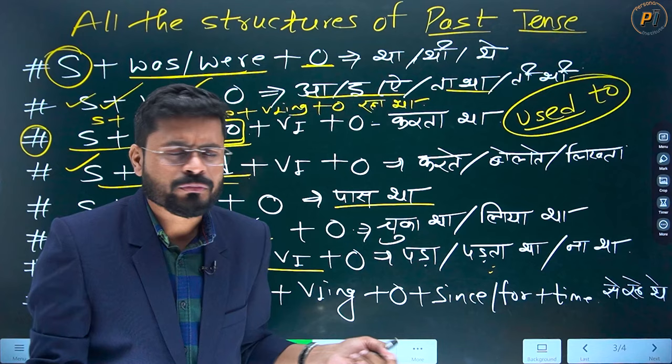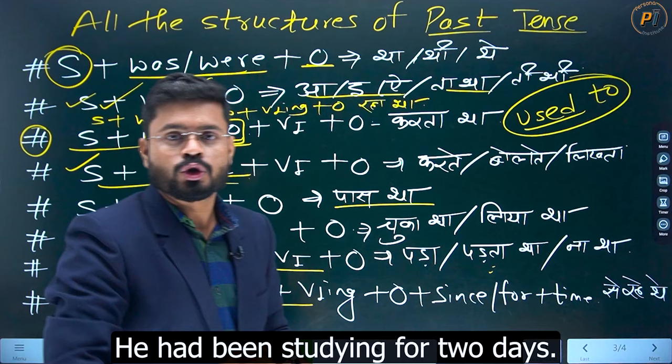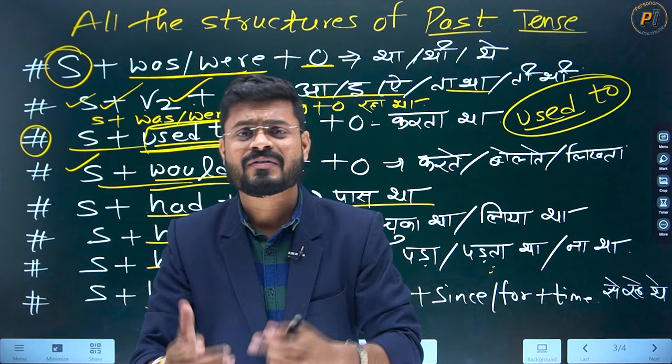Acha hi — maine kaha: woh do dino se padhai kar raha hai — he has been studying for two days. Ab iska past hoga: woh do dino se padhai kar raha tha — he had been studying for two days. Woh do dino se English seekh raha tha — he had been learning English for two days. Yeh past perfect continuous tense hai — jo last wala hai — aapka.